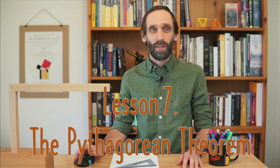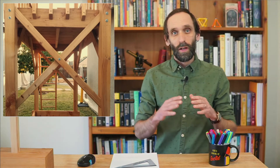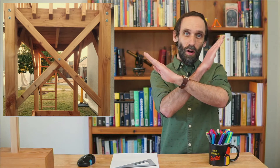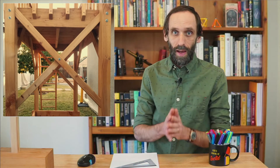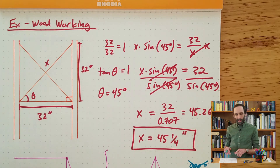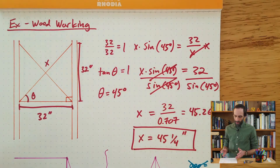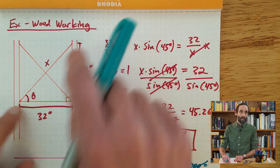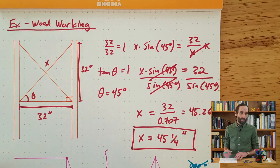For our first example, I'd like to go back to this situation from the previous lesson where we were measuring the lengths of the diagonal cross braces to support and stabilize that play structure. So let's take a look at that. Here is our solution from the previous video. We used the tangent function to find this angle, and then we used the sine function to find the length of the diagonal. Now let's look at how we can use the Pythagorean Theorem to find this length a little bit more quickly.